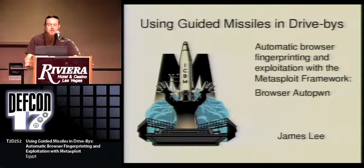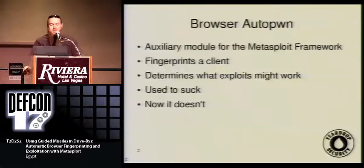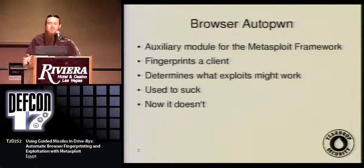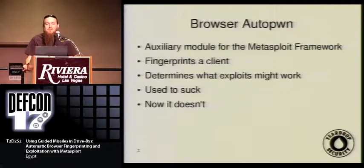I'm going to be talking about drive-bys, automatic browser fingerprinting, and exploitation with the Metasploit framework. The tool itself is called Browser Autopwn, and it's an auxiliary module for the Metasploit framework. The first thing it does is fingerprint a client to try to determine what exploits might work. I started this tool almost a year ago, and when I first wrote it, it sucked — and now I think it doesn't.